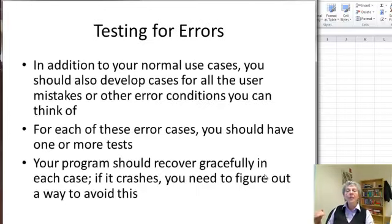Another thing we've seen is how to trap errors using 'on error go to some label.' We're basically bailing out, and at the label the code says 'on error go to zero,' which just quits the program.